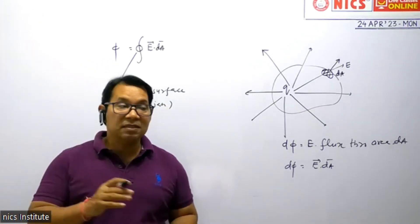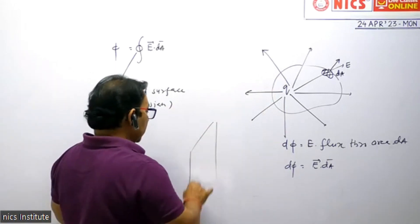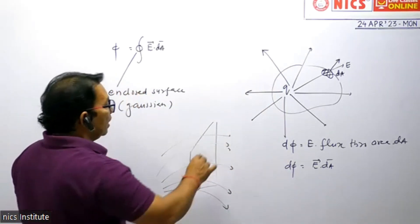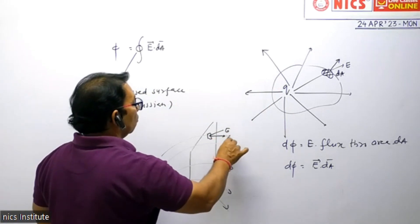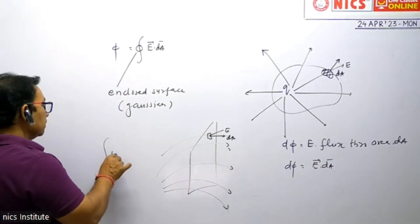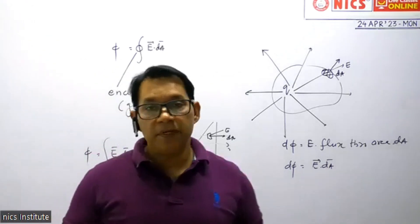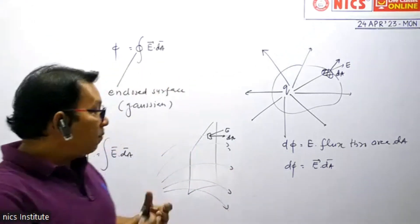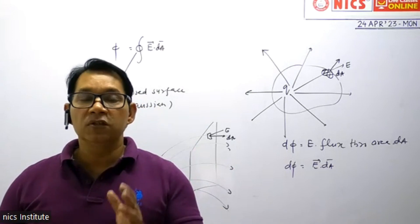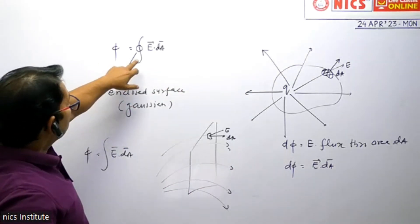If the surface is two-dimensional, I cannot put a circle on the integral. I take a small area DA, find the electric field, and integrate over the entire area to get the answer — but no circle for a 2D surface. A two-dimensional surface is not a Gaussian surface because there is no volume enclosed. If I take only one face of the cube, that is not a Gaussian surface. But a complete cube — yes, it is a Gaussian surface. A circle means it is an enclosed Gaussian surface.